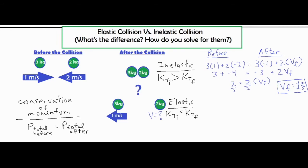I went through and did the algebra. It was three plus negative four, which is negative one. That equals negative three plus two VF. I added three to both sides — adding three to negative one made it two — so two equals two times VF. Divide both sides by two, and VF came out to a nice one meter per second.